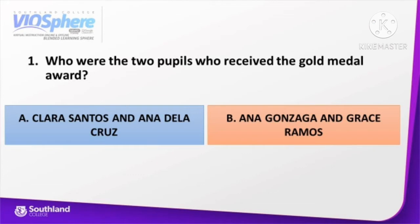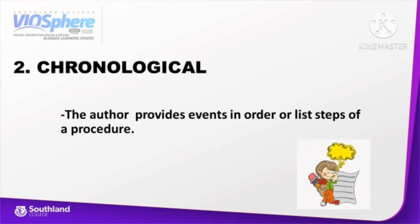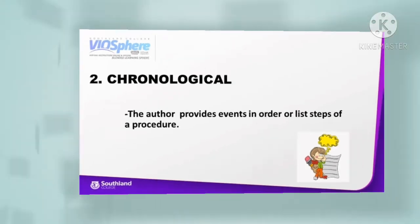Second example of type of text is chronological. The author provides events in order or lists steps of a procedure. The events may be organized by time or date, by arranging events as a series of steps, or by following a list-like structure.